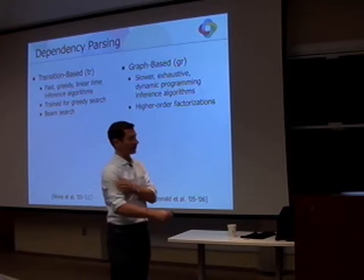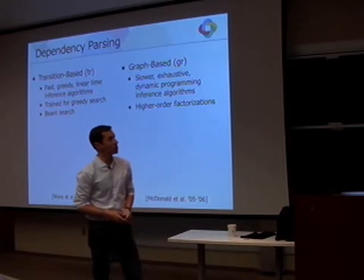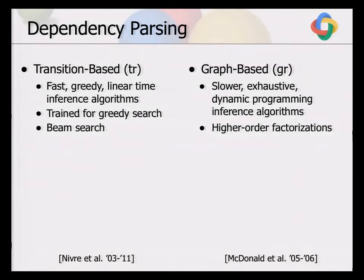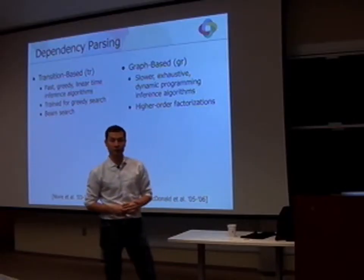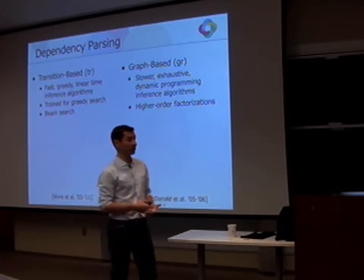The way I see dependency parsing, there are roughly two types of approaches. There are transition-based parsers that are typically greedy in nature — they're fast because they process the sentence left to right, maybe keeping a small beam. And then there are graph-based parsers that are slower because they run an exhaustive inference algorithm using dynamic programming. They allow higher-order factorization, so they can be more accurate — but unfortunately they're significantly slower.